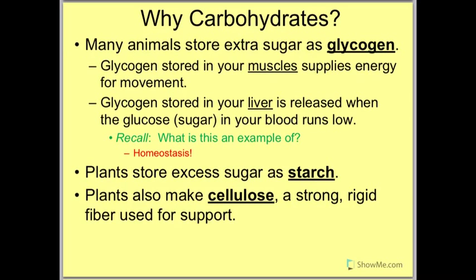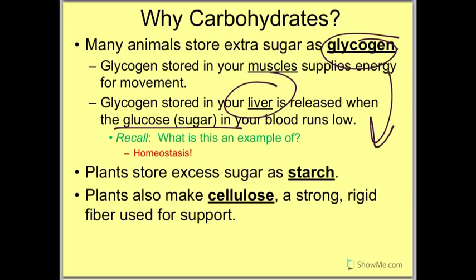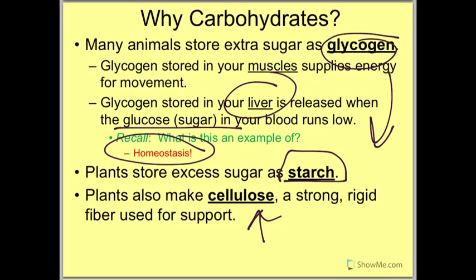Why are carbohydrates so important for energy? Many animals store extra sugar as glycogen — stored in your muscles to supply energy for movement. Glycogen stored in your liver is released when your blood sugar or glucose runs low — this is an example of homeostasis, maintaining our internal balance. Plants store excess sugar as starch, which we like to eat. And plants also make cellulose, which is strong and rigid and used for support, but we cannot digest it — it just passes through our digestive system.